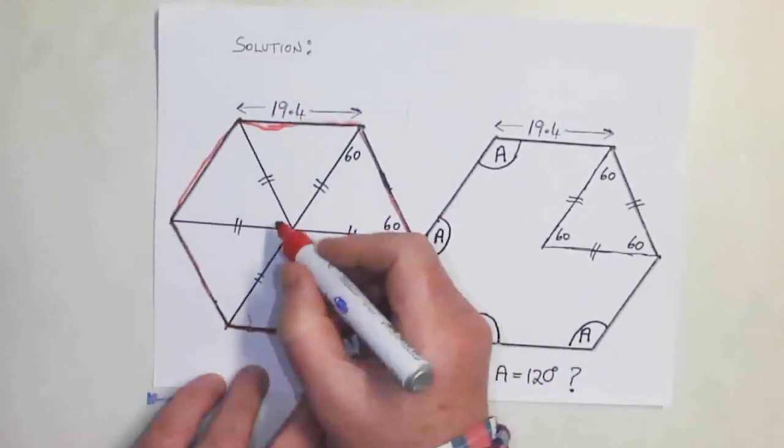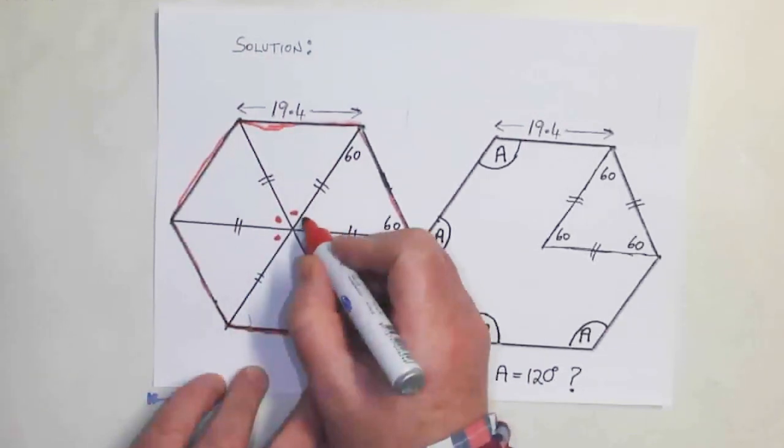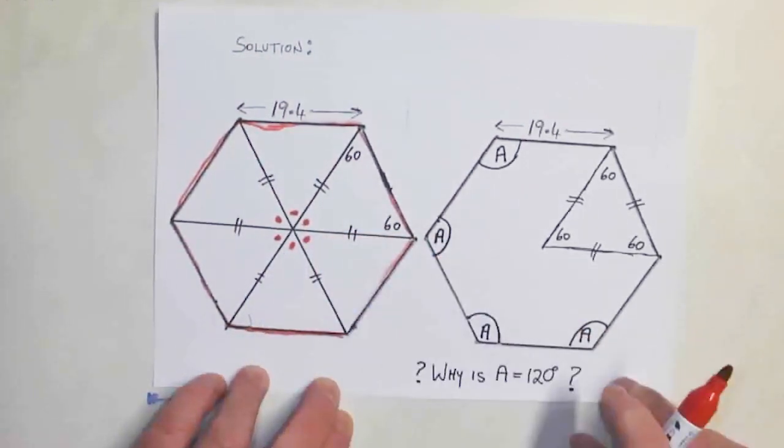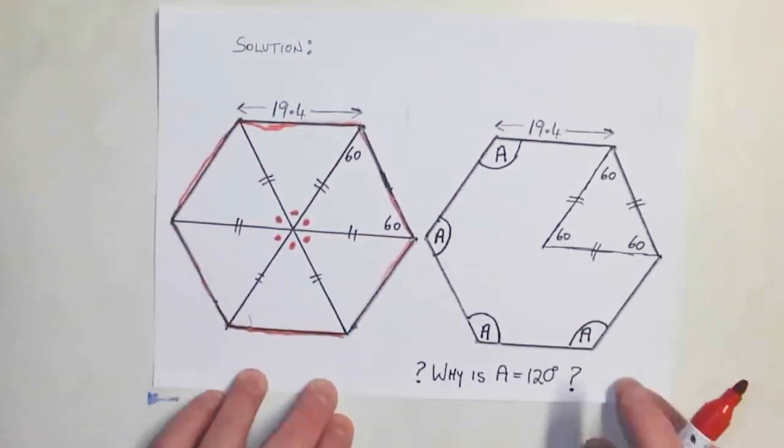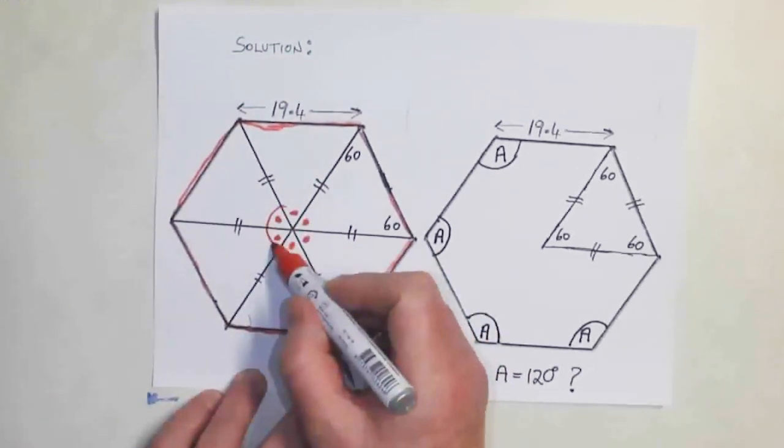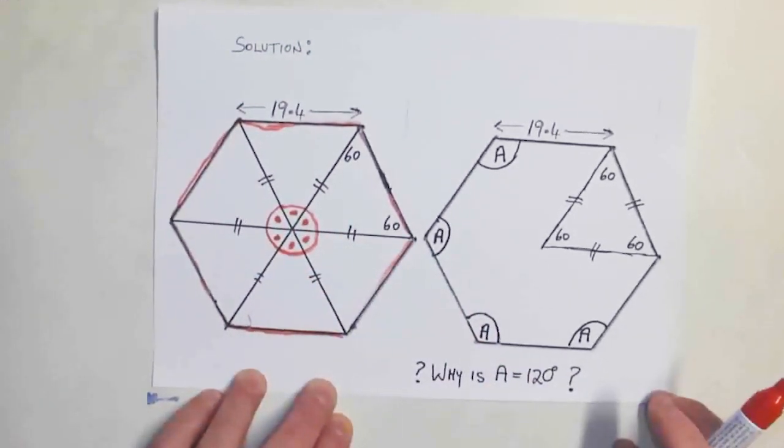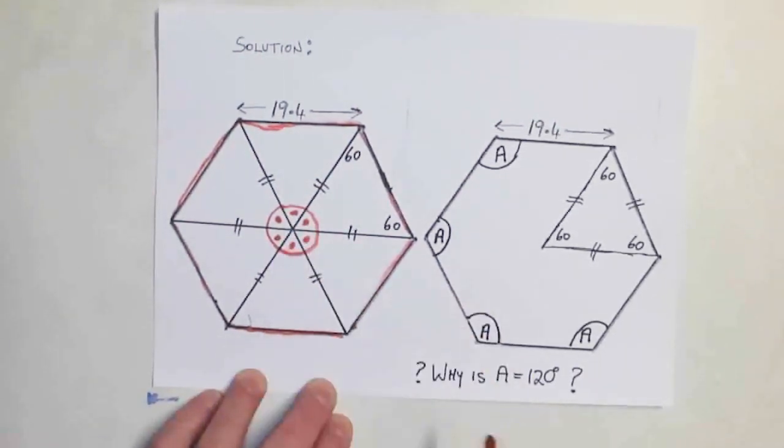Now if you watch, these six angles here, six red dots, they're all equal. There's 360 degrees in a complete circle. 360 divided by six gives you 60 degrees. Each of those are 60 degrees.